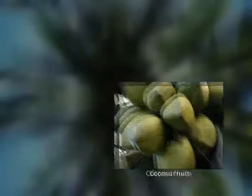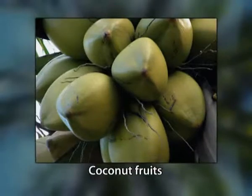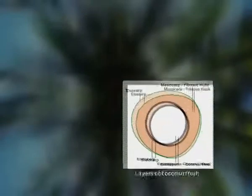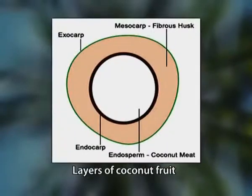Fifth, the fruit. Botanically speaking, the coconut fruit is a fibrous drupe, not a true nut, which is usually wide, fifteen to thirty centimeters long, and it contains a single seed or embryo. Like other fruits, it has three layers: exocarp, mesocarp and endocarp.